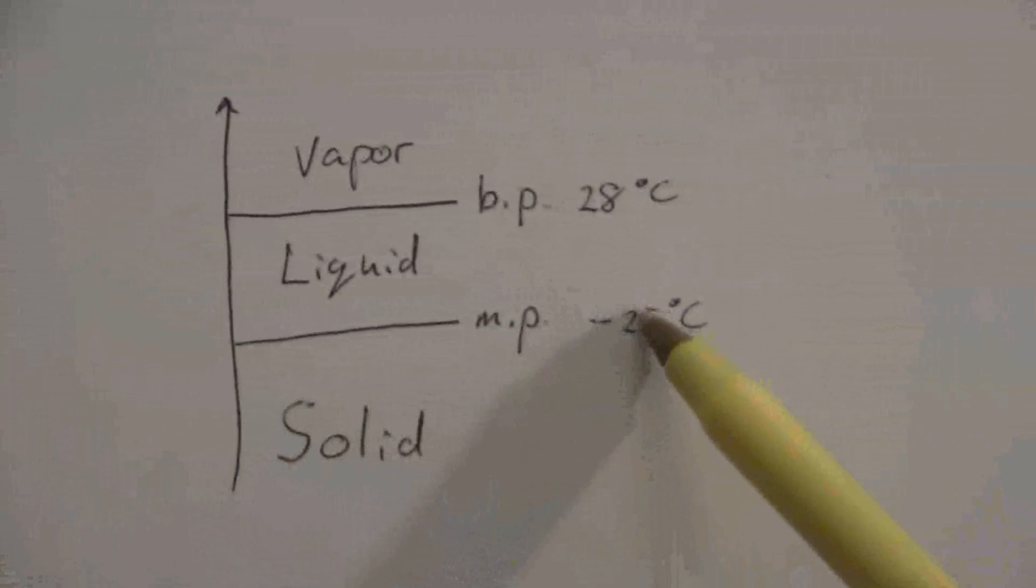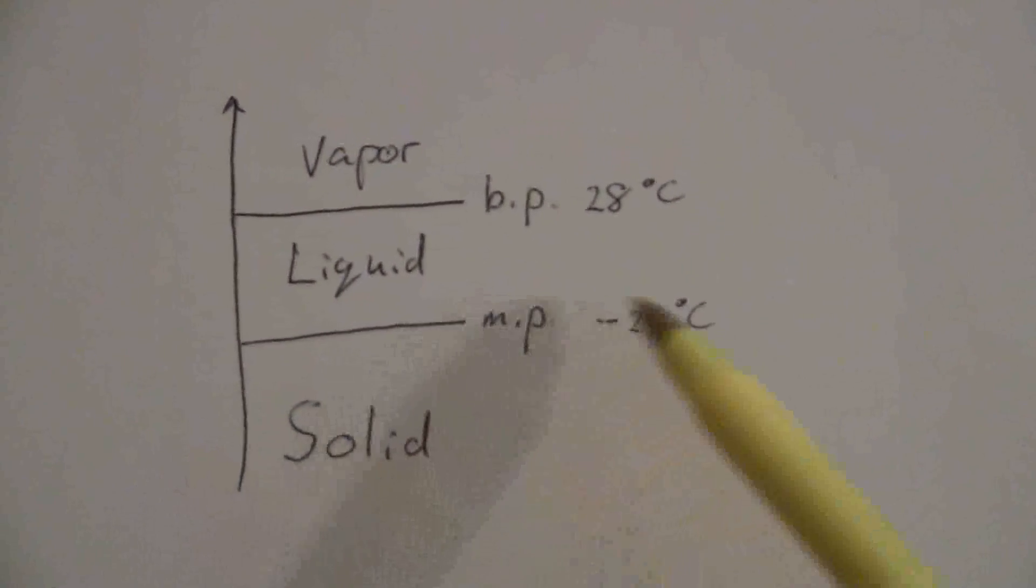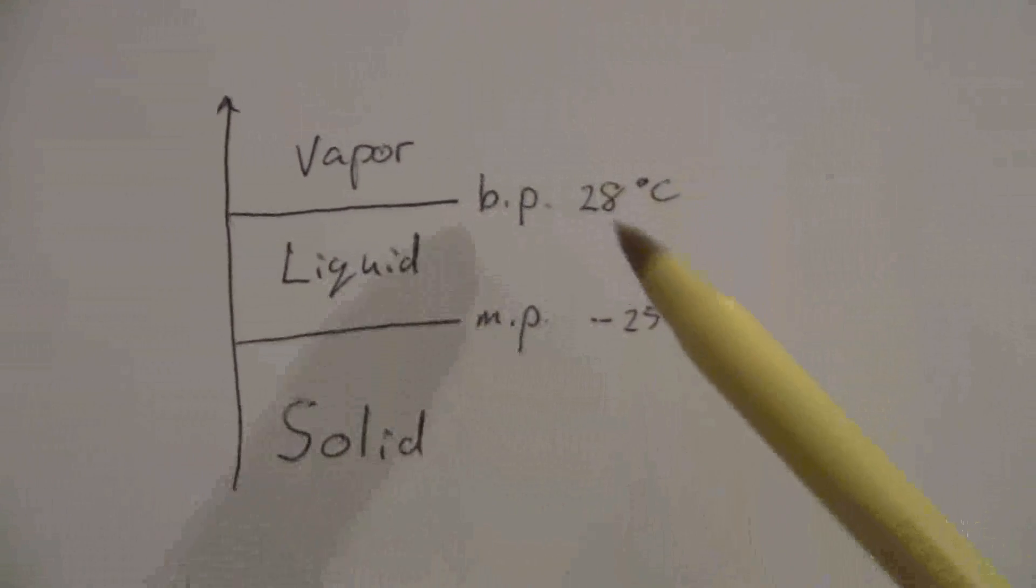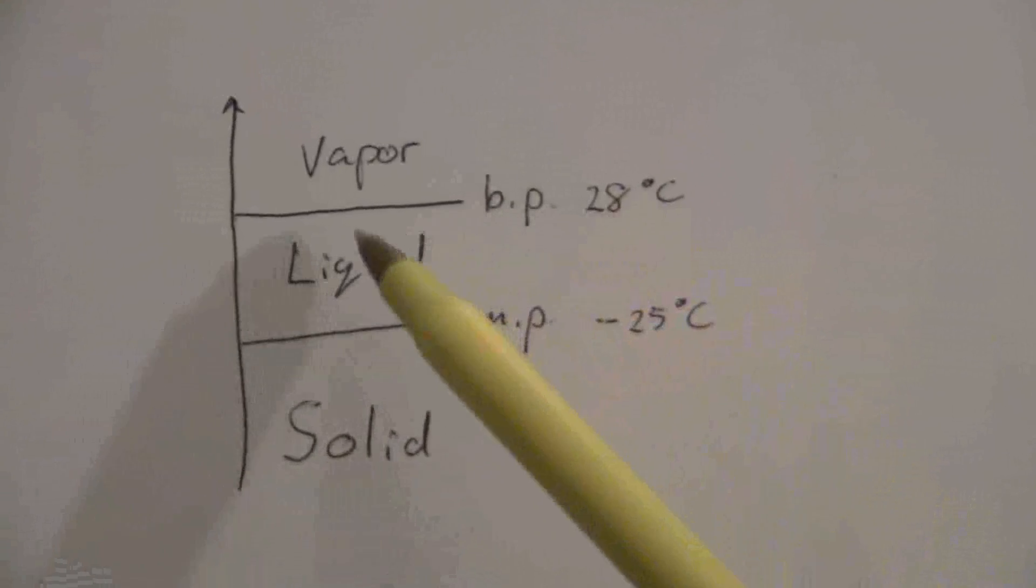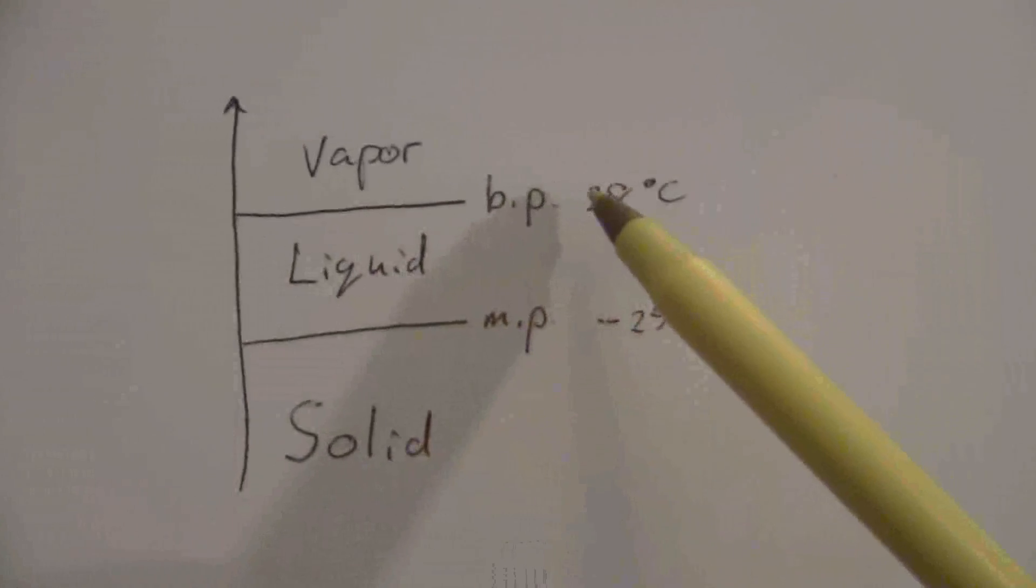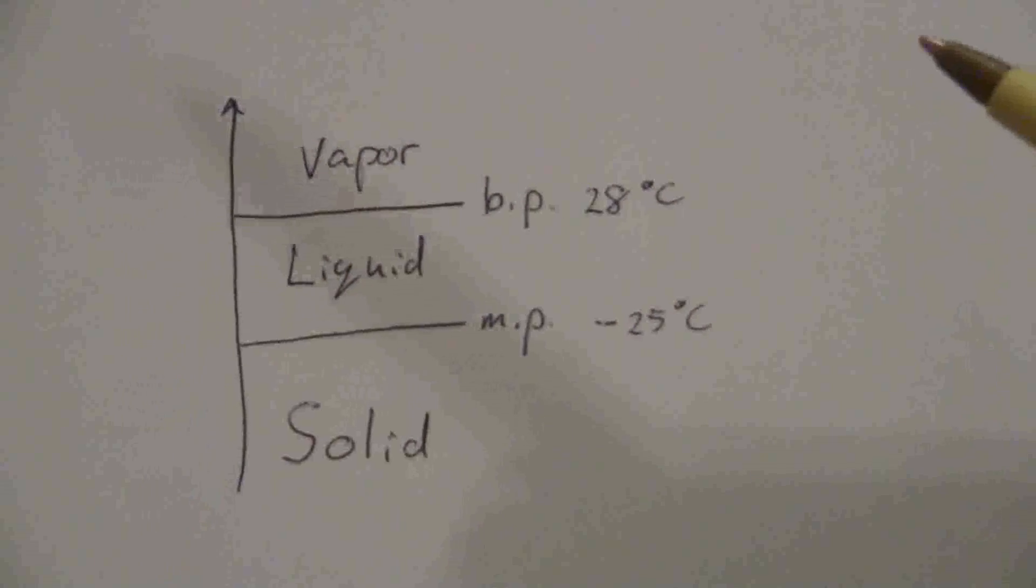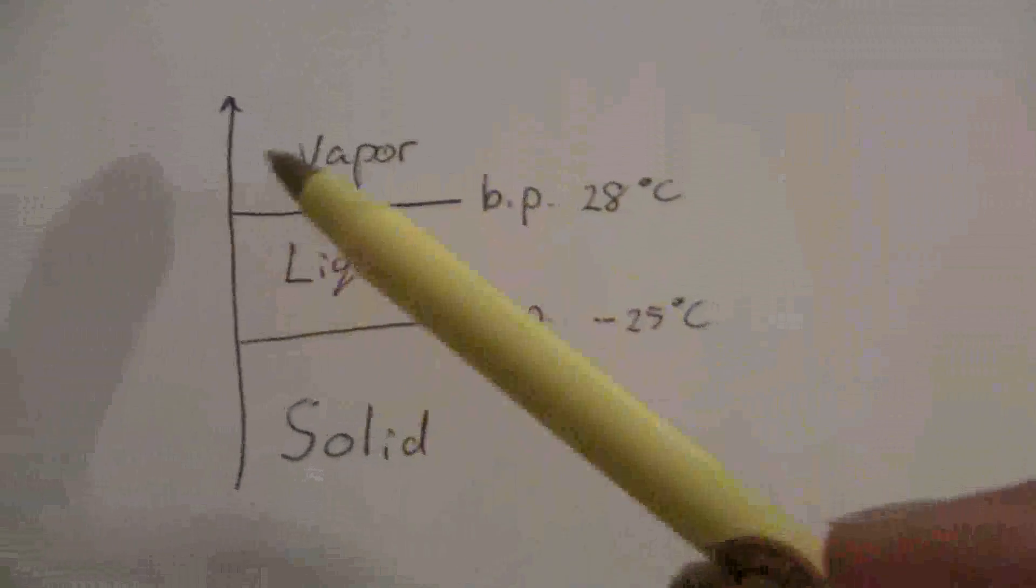Well, anything below negative 25, it's a solid. Between negative 25 and positive 28, it'll be a liquid. Above 28 degrees C, it's going to be a vapor. So at 35 degrees C, it's a vapor.